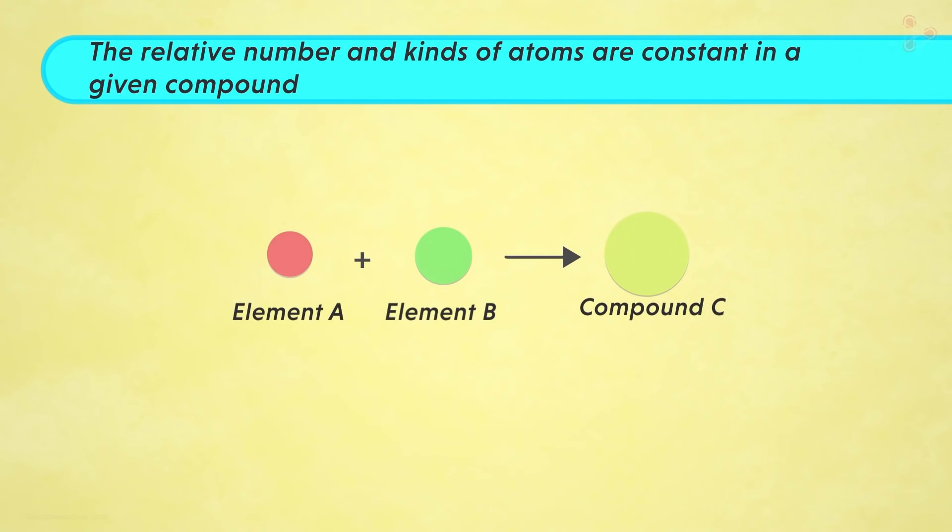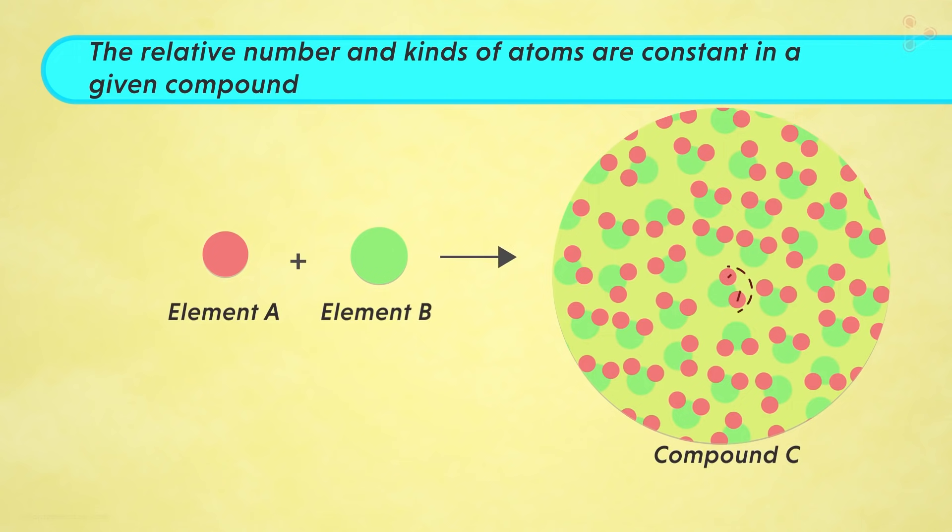Now for the last one! The sixth postulate states that the relative number and kinds of atoms are constant in a given compound. The same explanation that compound C has two atoms of element A and one of element B makes us understand this. If we scan compound C, we will always find two atoms of element A and one atom of element B in a single unit. And this is applicable for all compounds.